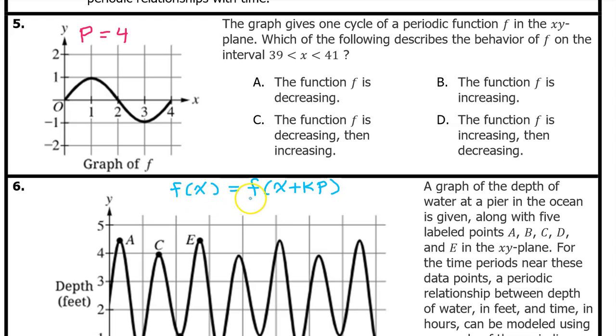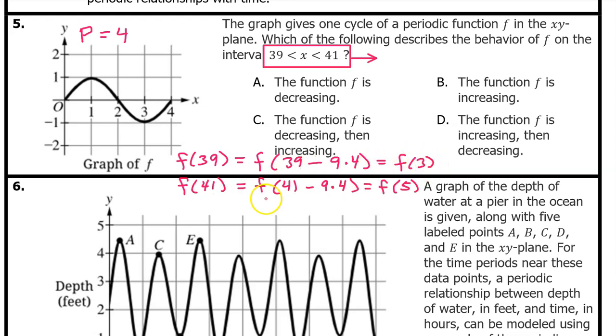We have learned that for a periodic function f, adding or subtracting multiples of the period does not change the value of the function. So f at 39 will be the same as f at 39 minus 9 multiples of the period. That's 39 minus 36, so it will be the same as f at 3. Similarly, f at 41 will have the same value as f at 41 minus 36, which equals f at 5.